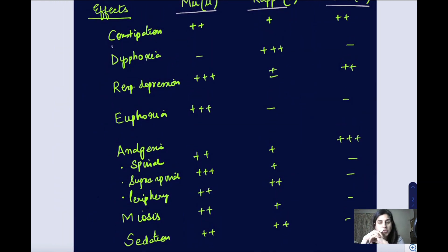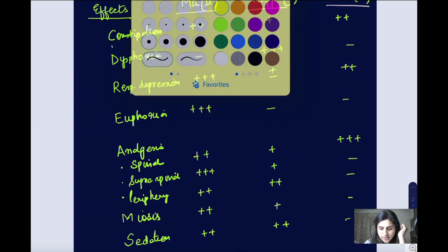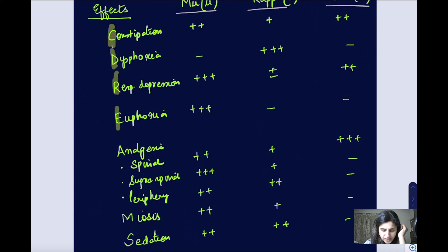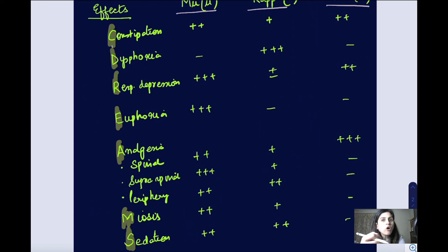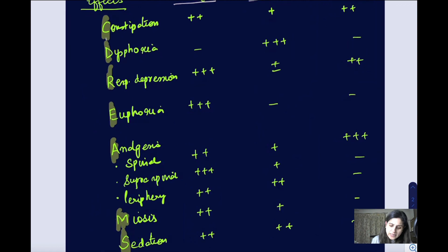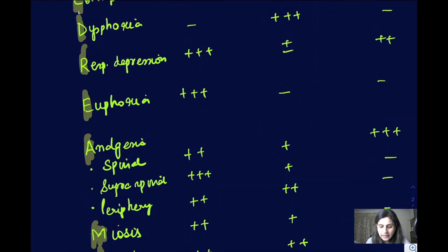So remember the mnemonic CDREAMS — constipation, dysphoria, respiratory depression, euphoria, analgesia, miosis, and sedation. An important point: dysphoria is an exception — it is only because of the kappa receptor, not mu. All other effects have a mu component. Drugs that are mu agonists will show all these effects, but dysphoria is most prominent when the drug is also agonistic at kappa receptors.